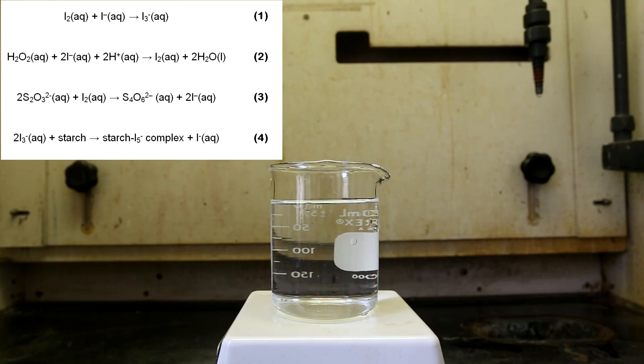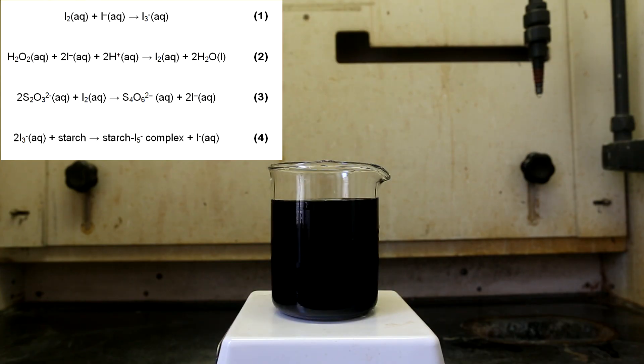As soon as the iodine is formed, it reacts with the thiosulfate ions to regenerate the iodide ion. This is represented by the third equation. The conversion of iodine back to iodide is so fast that it effectively keeps the concentration of iodine around zero.